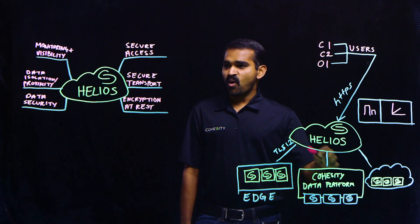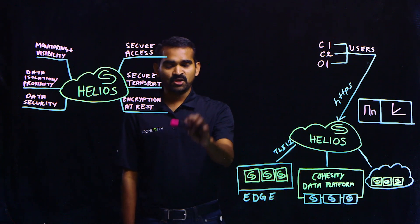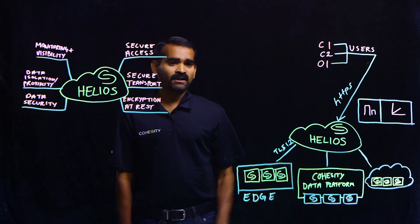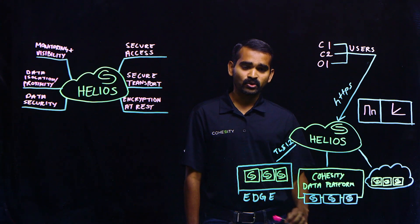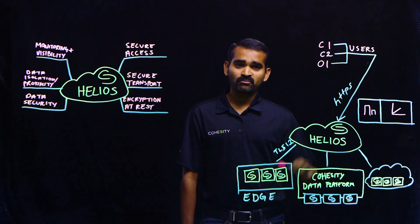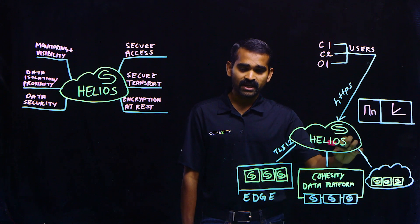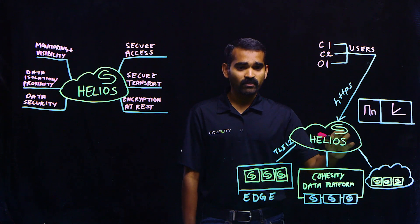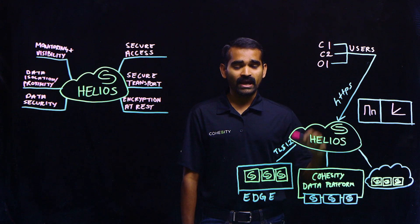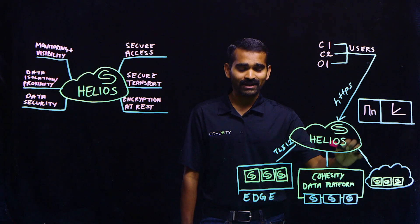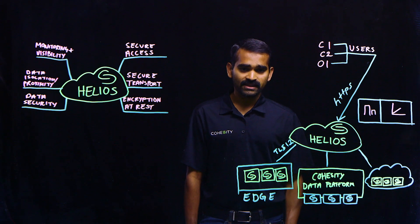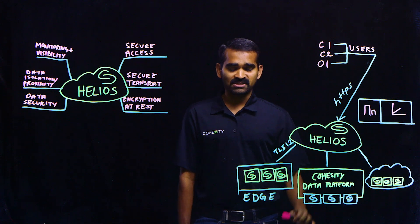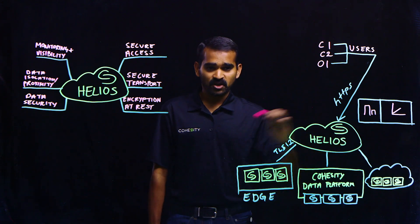We specifically use TLS 1.2 to make sure we're able to use high-end cipher securities. Let's move on to the next one, which is data encryption at rest. We bring only metadata into the Helios environment, and even so, we want to make sure we encrypt it at rest. The data in the Helios environment is encrypted at rest using AES-256 encryption.